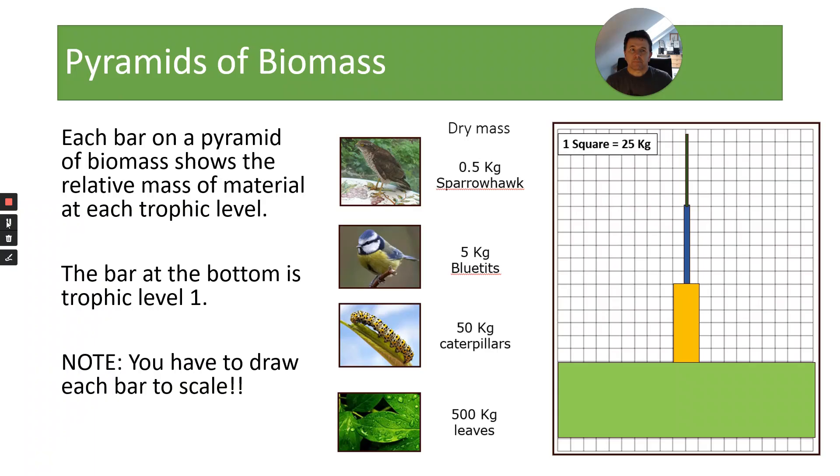Here we have the example of the food chain I just showed you. You can see you start off with leaves in the tree, then the caterpillar which is the primary consumer, then the secondary consumer the blue tits, and then the tertiary consumer the sparrowhawk. You'll notice the biomass is reducing at each level.